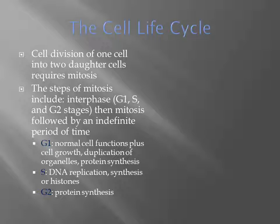The cell life cycle: division of one cell into two daughter cells requires a process called mitosis. The steps include interphase with G1, S, and G2 stages, followed by mitosis. G1 involves normal cell function plus cell growth, duplication of organelles, and protein synthesis. S is DNA replication with synthesis of histones. G2 involves protein synthesis.